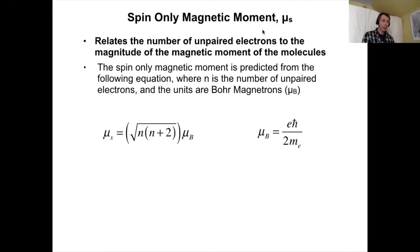Our spin-only magnetic moment gets this abbreviation mu sub s for spin and it's a fairly simple equation. Mu sub s equals the square root of n times n plus 2, where n is the number of unpaired electrons in your sample. In the end this gets the units Bohr magnetons which is symbolized by mu sub b. A Bohr magnetron equals the electron charge times h bar divided by 2 times the mass of an electron. Most of the time we'll just report our answers in Bohr magnetons.